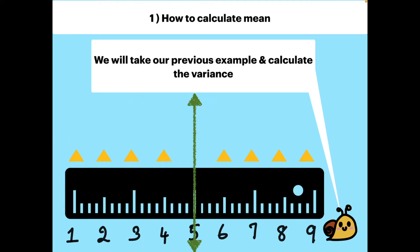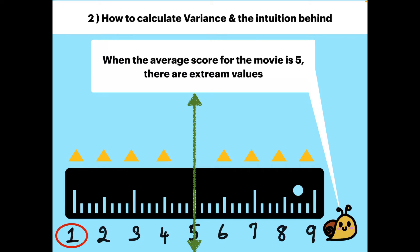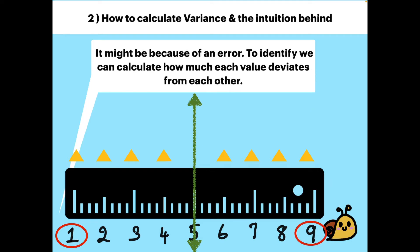Take our previous example and calculate the variance. When the average score for the movie is 5, there are extreme values 1 and 9. It might be because of an error. To identify, we can calculate how much each value deviates from the mean.